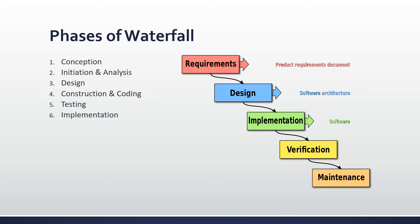Phase two cannot be started until phase one is completed. The phases of waterfall methodology are: first, conception — the idea stage where developers decide what they want to design and why. Then initiation and analysis — gathering and documenting what the project will require, including system and software requirements. Design — developers determine how the software will work and which pieces are necessary to code. Construction and coding — coding each unit and testing along the way, as well as integrating units according to the software architecture from the design phase.